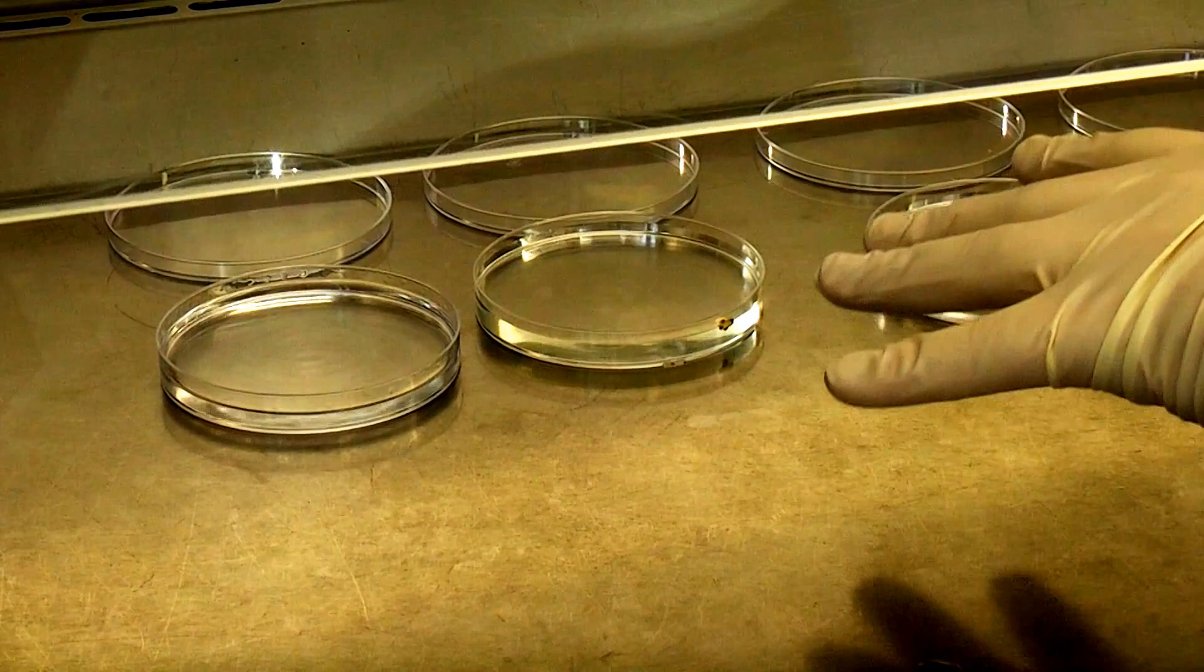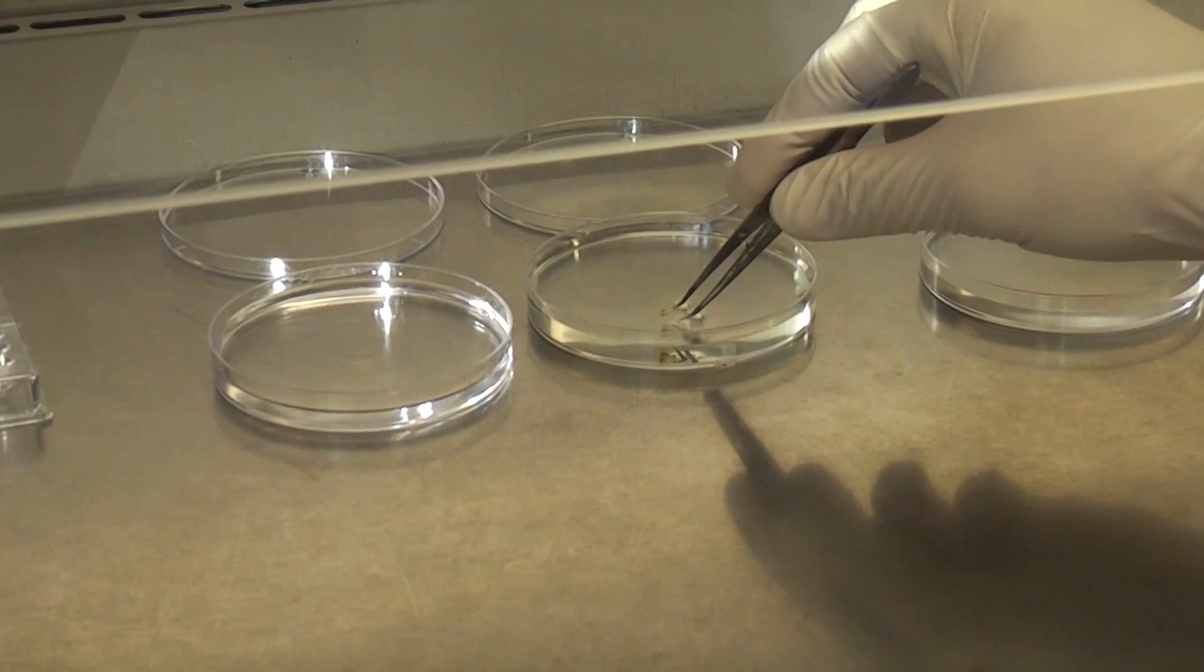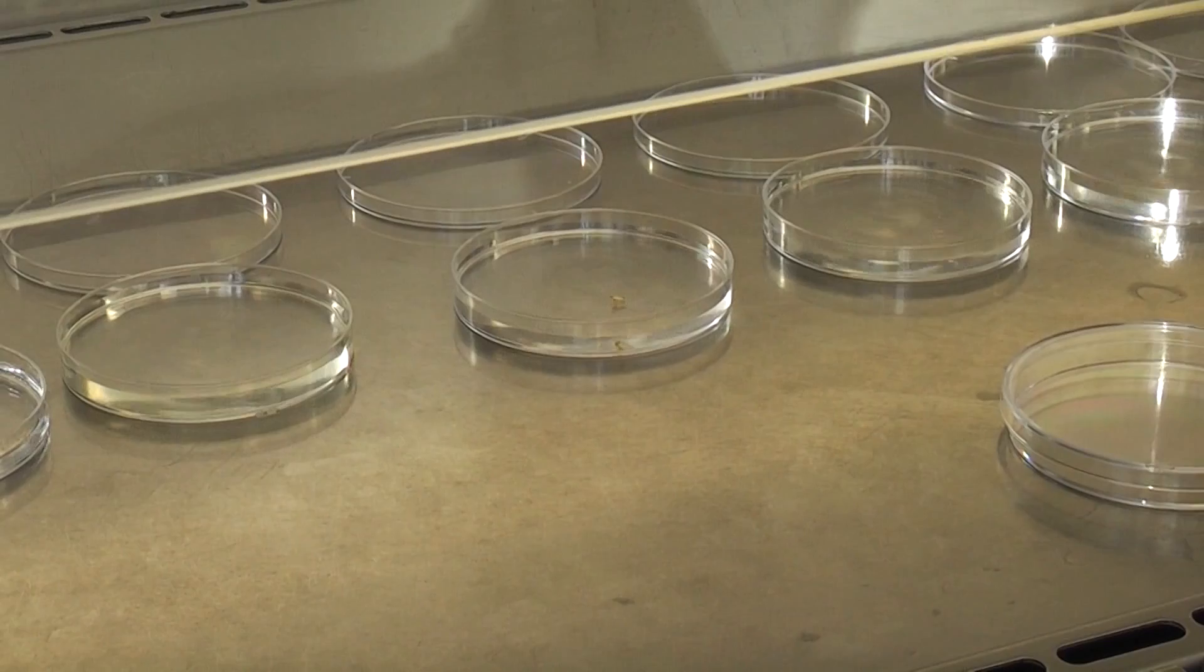Alright so that nodule has been in the bleach for about 3 minutes. So I'll just take it out when I catch it. Sometimes this can be hard. And put it in some sterile water. Now I tend to leave it in the first petri dish for a little bit longer and the rest just helps it to remove as much of the bleach and alcohol as possible.